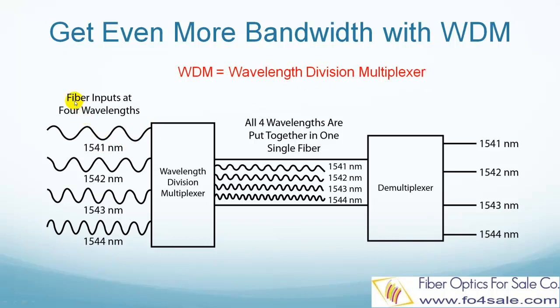What this means is that many different colors or wavelengths of light are put into a single fiber. This picture shows a simple 4-channel WDM. But there are 32 channels, 64 channels, or even more available on the market now. Now imagine how much information a single fiber can carry.